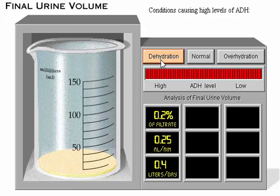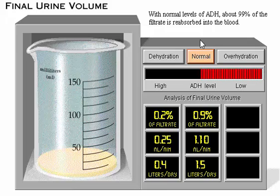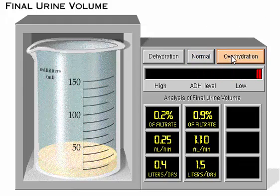With normal levels of antidiuretic hormone, about 99% of the filtrate is reabsorbed into the blood. This leaves about 0.9%, or 1.1 milliliters per minute of concentrated urine, to continue passage into the renal pelvis and urinary bladder — approximately 1.5 liters per day. With low levels of antidiuretic hormone, the approximate final urine volume is 12.5% of the filtrate, equal to 16 milliliters per minute, or 22.5 liters per day.